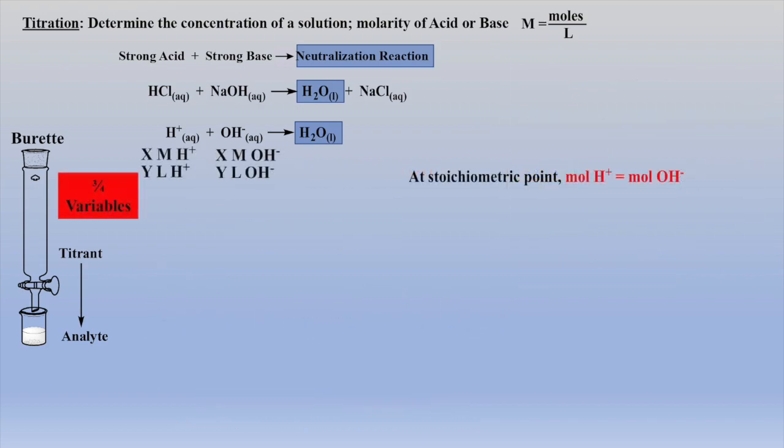At the heart of all titrations are stoichiometric calculations. Typically there are four values that are variables and you will be given three of them, either directly or indirectly, and asked for the fourth. For example, if you are given a molarity and volume of a base that was added to a volume of acid, then you will be asked what is the molarity of the acid — given three of four variables and asked for the fourth.